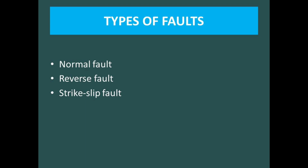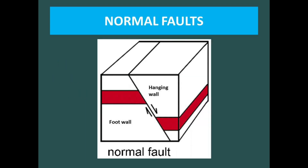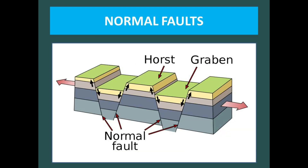Normal faults are developed by extensional forces and are found when the hanging wall block moves downward relative to the footwall block. The associated structures are horst and graben structures.